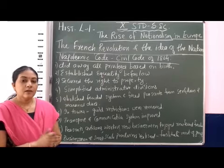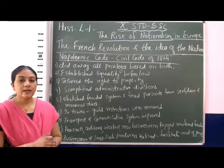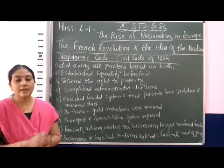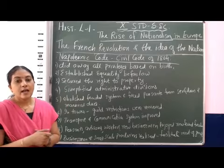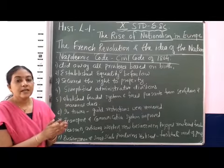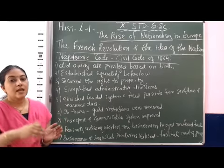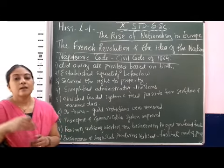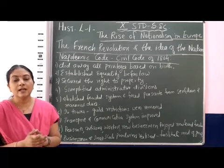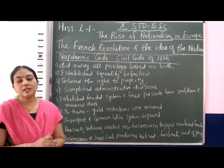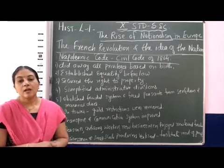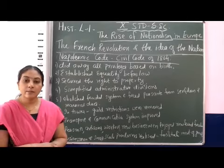In towns, merchants had their own guilds — every merchant group was called a guild — and a person could not change his trade; for example, a goldsmith could not become a blacksmith because guild restrictions prevented it. But when Napoleon came, he removed those guild restrictions as well, so now any person could do any type of business.